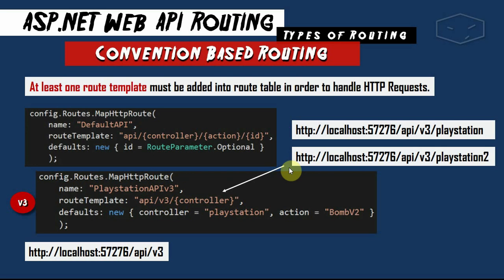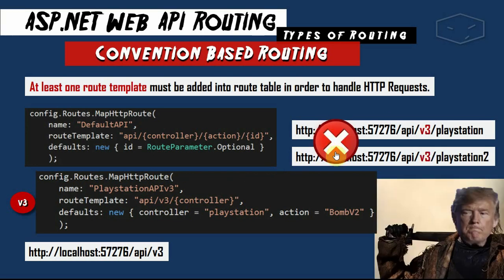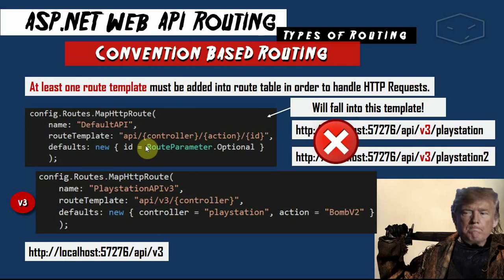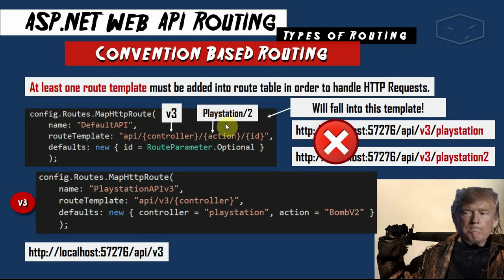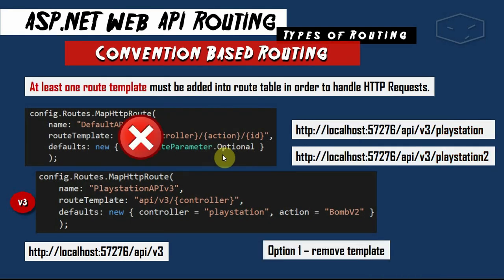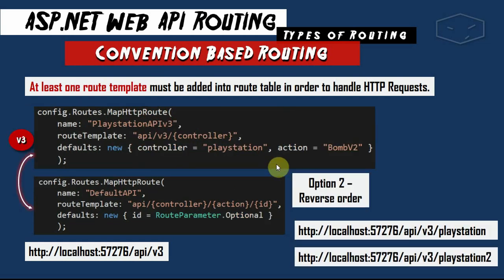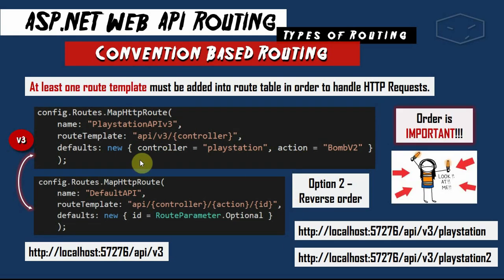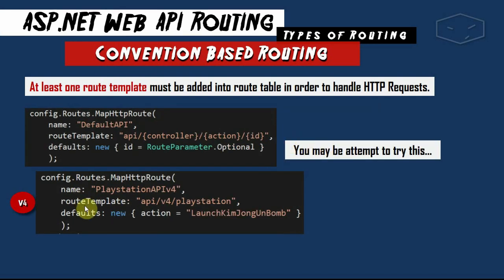Because the controller has a placeholder, we can also handle PlayStation2 and PlayStation3. But here we fall into our first problem: this will not map correctly — it will match the first default template, which will interpret v3 as the controller and PlayStation or PlayStation2 as the action, with id being optional. To solve this, the first option is to remove the default template, and the second option is to reverse the order. The order in which templates are declared in configuration is important.